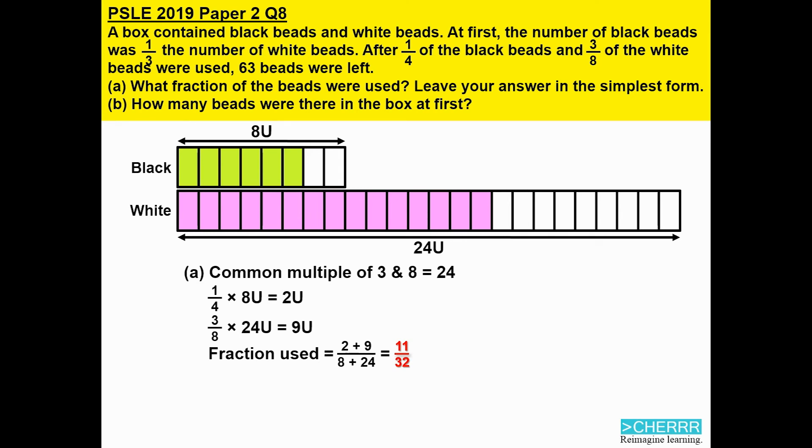To solve for Part B, we need to calculate the number of units that were left. So 32 units minus the 11 units that were used, we have 21 units, which represent the 63 beads. One unit will be 63 divided by 21 to get us 3.